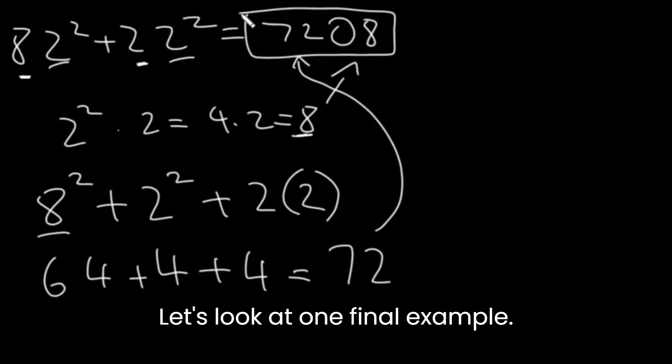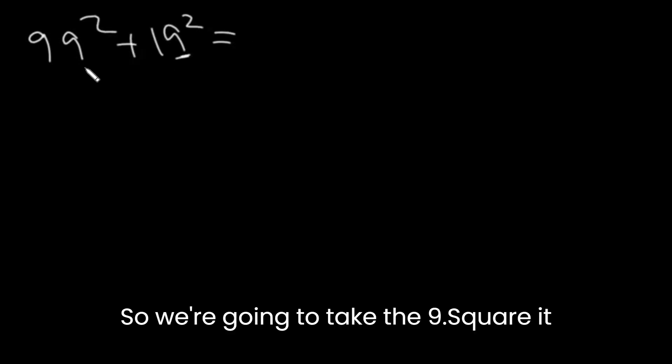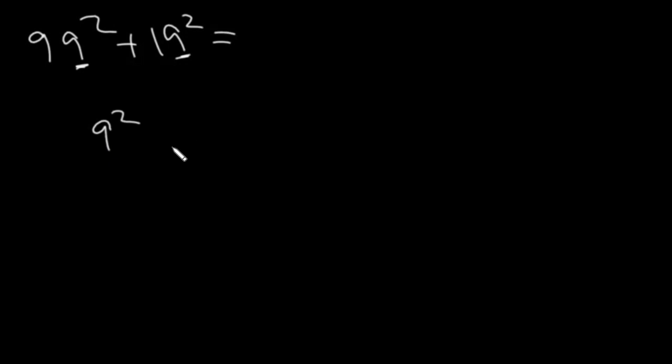Let's look at one final example. Let's say we have 99 squared plus 19 squared. So we're going to take the 9, square it, and multiply it by 2. 81 times 2.